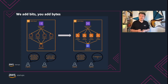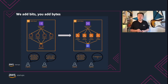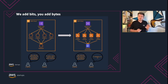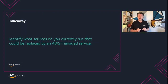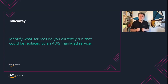Another good example is shown on the diagram: a shift to serverless architecture removes the need for you to run and maintain physical servers and virtual machines. You can have better utilization of your resources and less management overhead. This approach will enable your valuable engineering resources to focus on developing new features and providing value to your customers. The key takeaway is to identify what services you currently run that could be replaced by an AWS managed service — you should focus on innovating rather than keeping the lights on.